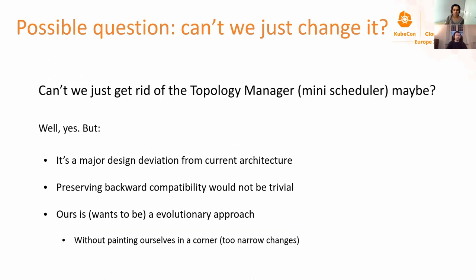You might say this is clearly a consequence of a split-brain problem — why don't we get rid of topology manager, the so-called mini-scheduler? We theoretically could, but it's not that simple. In the current architecture, it is an intentional decision to keep the hardware implementation and information local to the node, and the resource managers within kubelet take care of resource allocation. Topology manager has been with us since Kubernetes 1.16 and graduated to beta in 1.18, and preserving existing behavior and backward compatibility is not trivial. With NUMAware scheduling, we are taking incremental, evolutionary steps to address all these concerns.